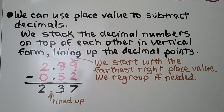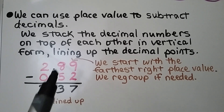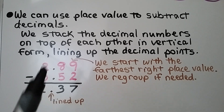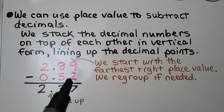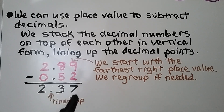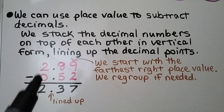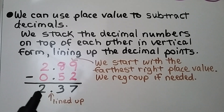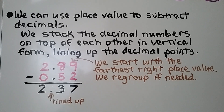You can see our decimal points are all lined up. 9 minus 2 is 7, 8 minus 5 is 3, 2 minus 0 is 2. We have 2 and 37 hundredths.